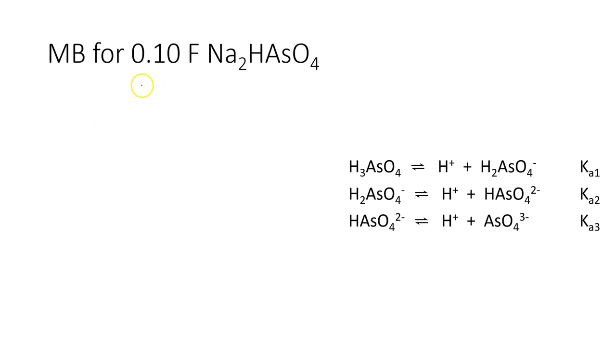Let's try another one. It's very similar. Let's see if we can write the mass balance for a 0.1 formal solution of a salt containing hydrogen arsenate. So, the first thing, there's actually going to be two mass balances here. The first thing I want to do is write down the dissociation of this salt, remembering that all group 1A salts are soluble. So, this salt will dissociate 100% from sodium hydrogen arsenate into two sodiums and one hydrogen arsenate.